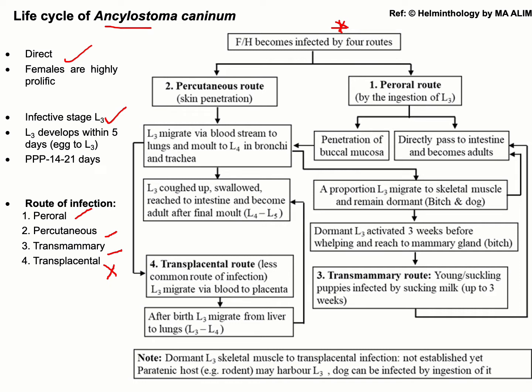The final host can be infected by four routes as mentioned. The first is the oral route of infection, where the final host is infected after ingesting L3 with contaminated food and water. This L3 will directly pass to the intestine and become the adult parasite.